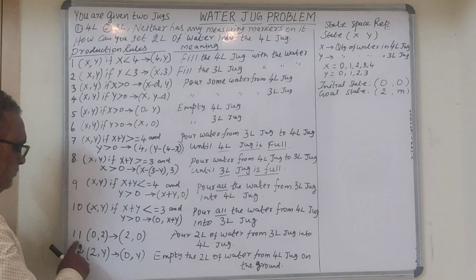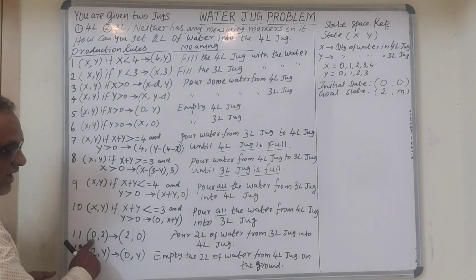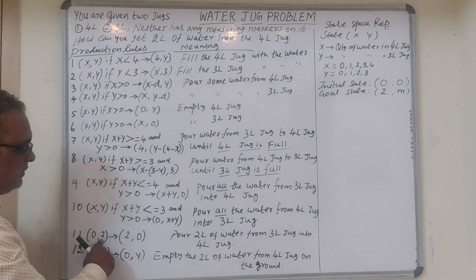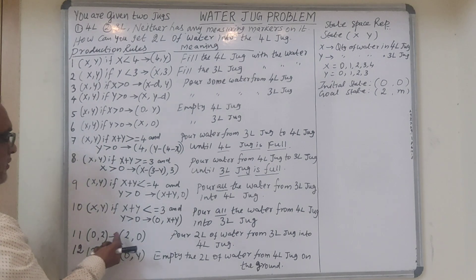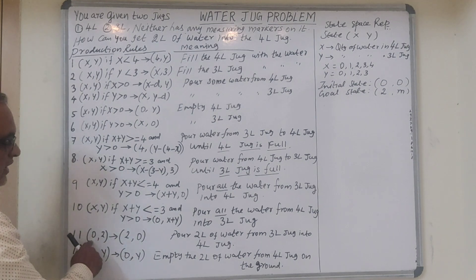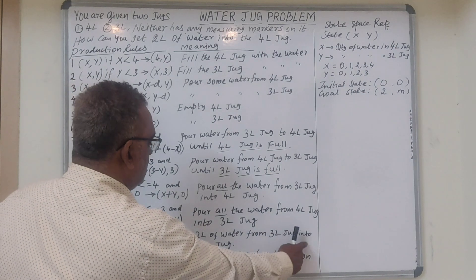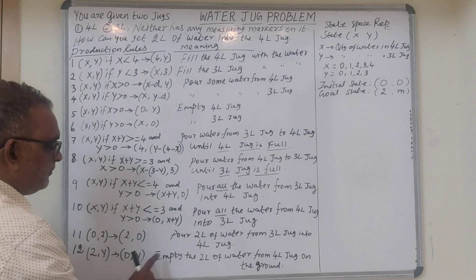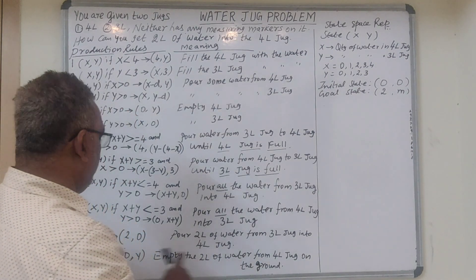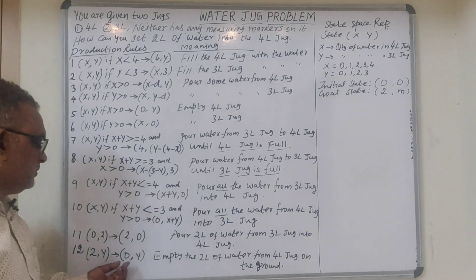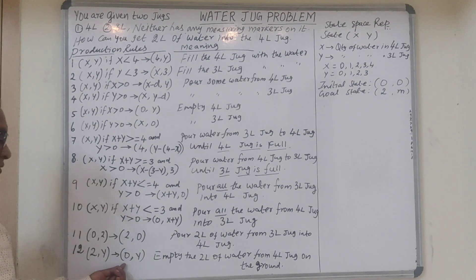Rule 11: if there is no water in the 4-litre jug and you have 2 litres of water in the 3-litre jug, you can transfer that 2 litres from the 3-litre jug into the 4-litre jug. Rule 12: 2 comma Y — this implies emptying the 2 litres of water from the 4-litre jug onto the ground, removing the water so that the result is 0.